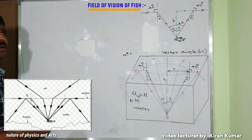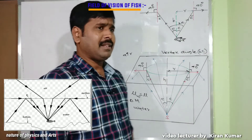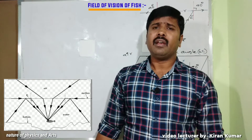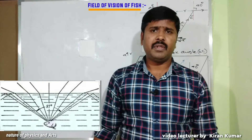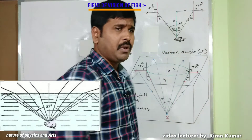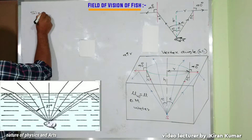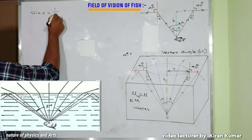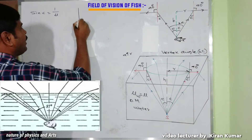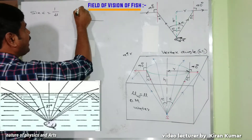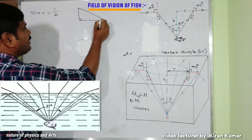Considering Snell's law for light traveling from the denser medium to the rarer medium, the relation between the critical angle and the refractive index of water gives us: sin C = 1/μ. Considering a right-angle triangle, sin C equals the opposite side divided by the hypotenuse.